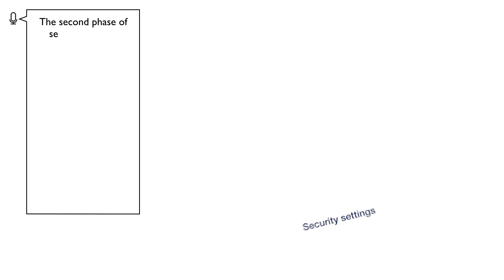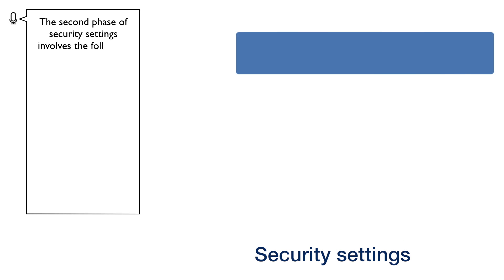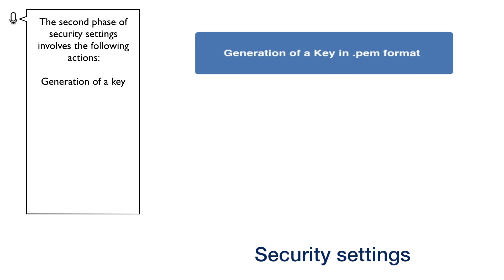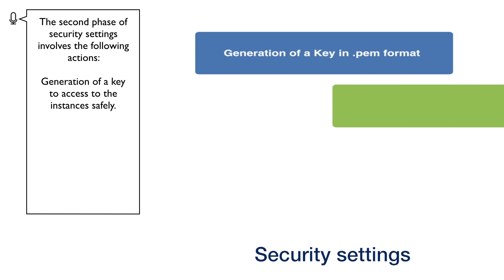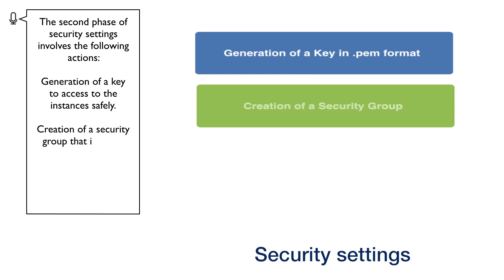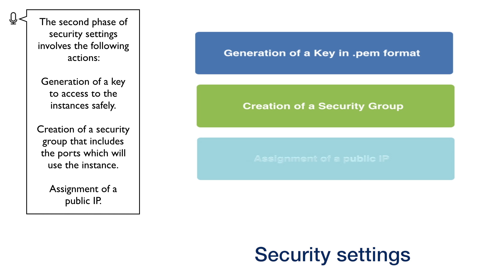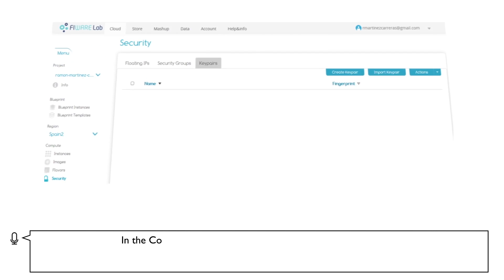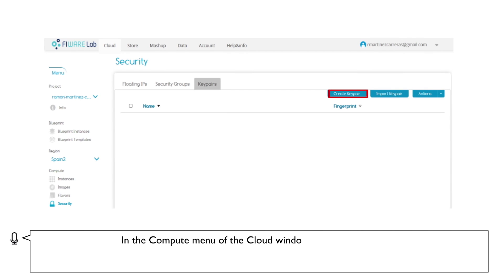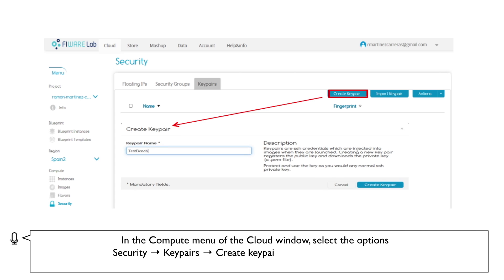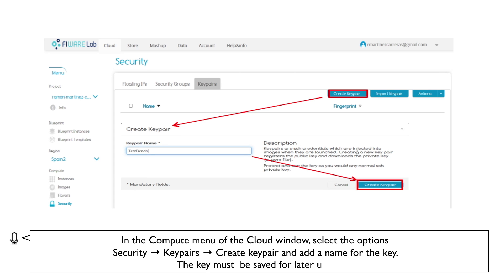The second phase of security settings involves the following actions: generation of a key to access the instances safely, creation of a security group that includes the ports which the instance will use, and assignment of a public IP. In the Compute menu of the cloud window, select the options Security, then Key Pairs, then Create Key Pair and add a name for the key. This key must be saved for later use.